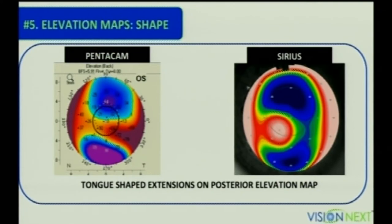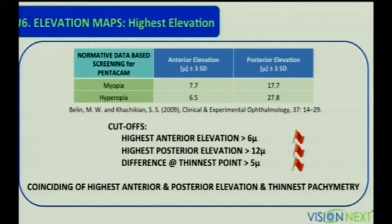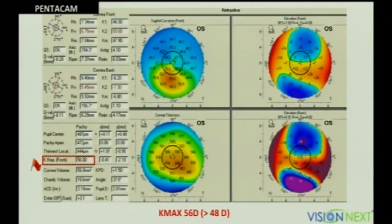If you get a tongue-shaped extension into the elevation map, that's definitely abnormal. There are documented cutoffs for Pentacam, separate for myopia and hyperopia. Because of differences in how elevation is calculated for Sirius versus Pentacam, use lesser cutoffs for anterior and posterior elevation to stay safe. The most important point is the coinciding of the highest anterior and posterior elevation with the thinnest pachymetry — this is what you should look for whenever screening a patient for refractive surgery.